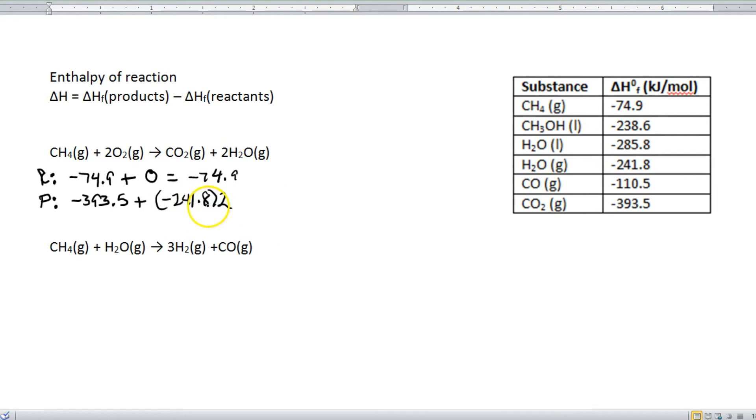So you multiply that out first. Then you add in the negative 393.5. And what you get is negative 877.1. So step one is add up the reactants. Step two, add up the products.